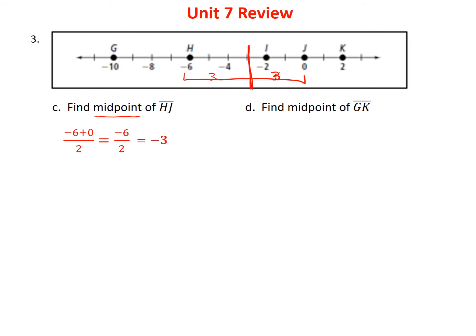For the midpoint between G and K: (2 + (-10)) / 2 = -8 / 2 = -4. That's the halfway point between those two. Counting the spaces — six on one side and six on the other — confirms that negative four is our midpoint.